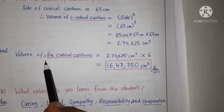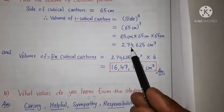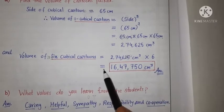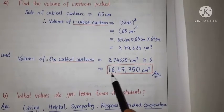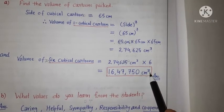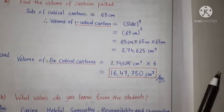And volume of six cubical cartons hamare paas hoga. Hamein one cubical carton ke volume ko six se multiply karenge. That will be equal to 16,47,750 cm cube. That is our required answer.